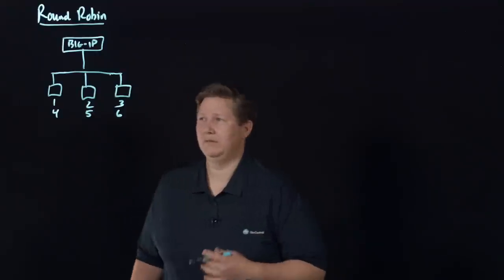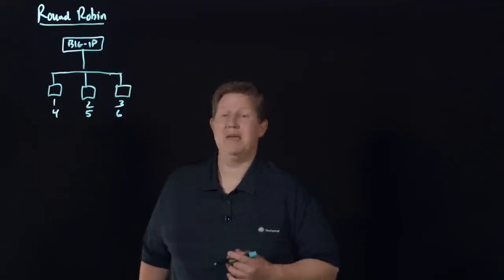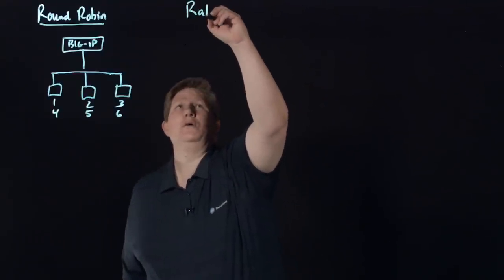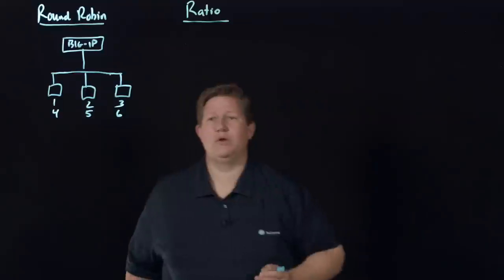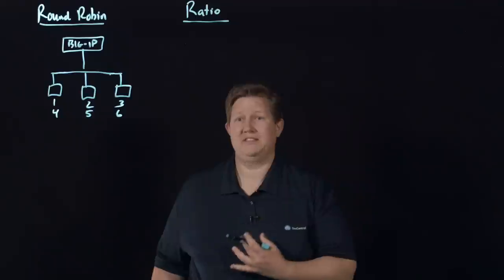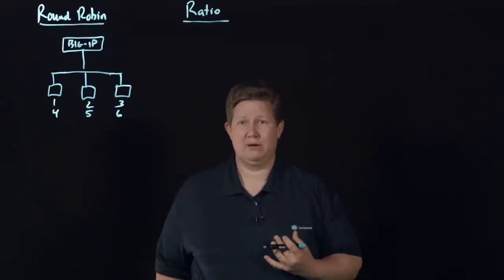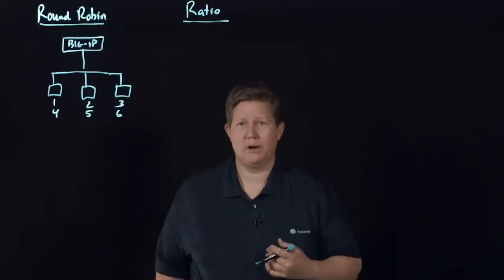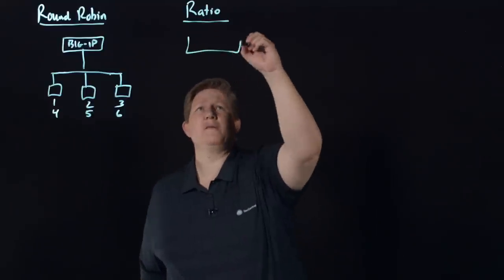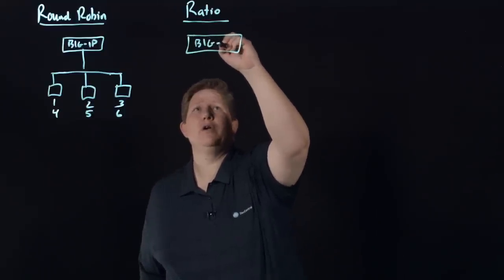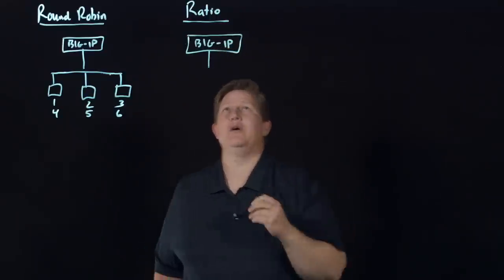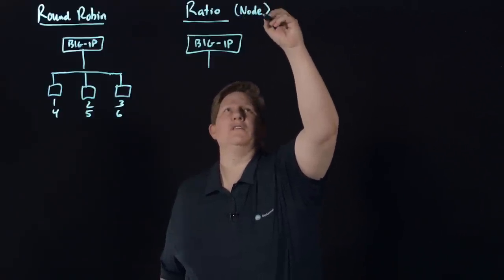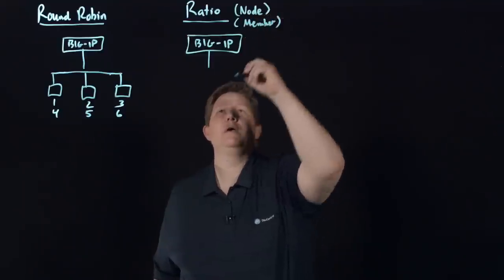The next thing we'll talk about is ratio. When you're using the ratio load balancing algorithm, this is also a static load balancing algorithm. We don't call it this, but some other resources out there will call ratio weighted round robin. This is something you configure on your pool members or your nodes.